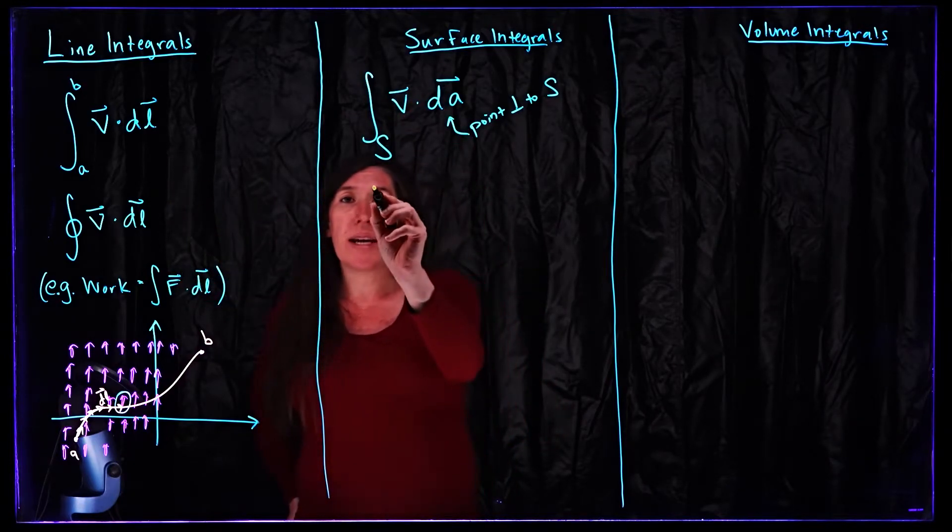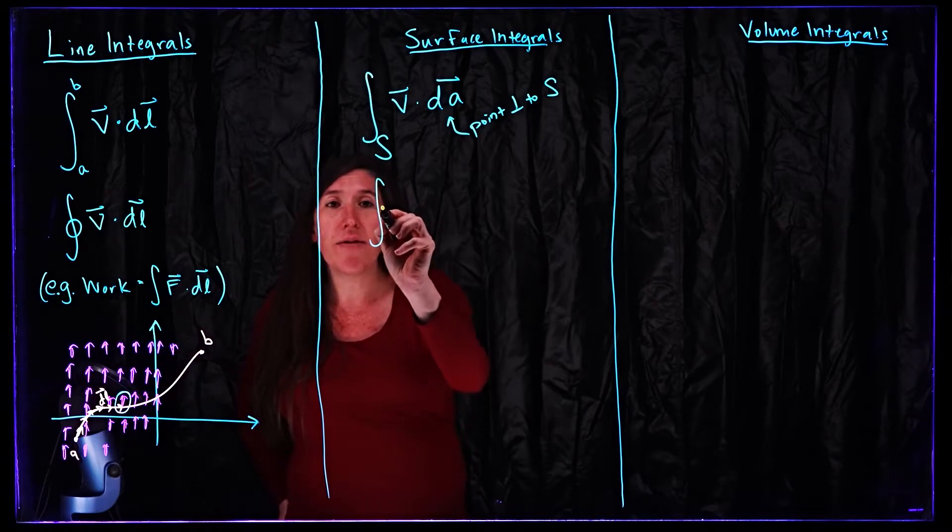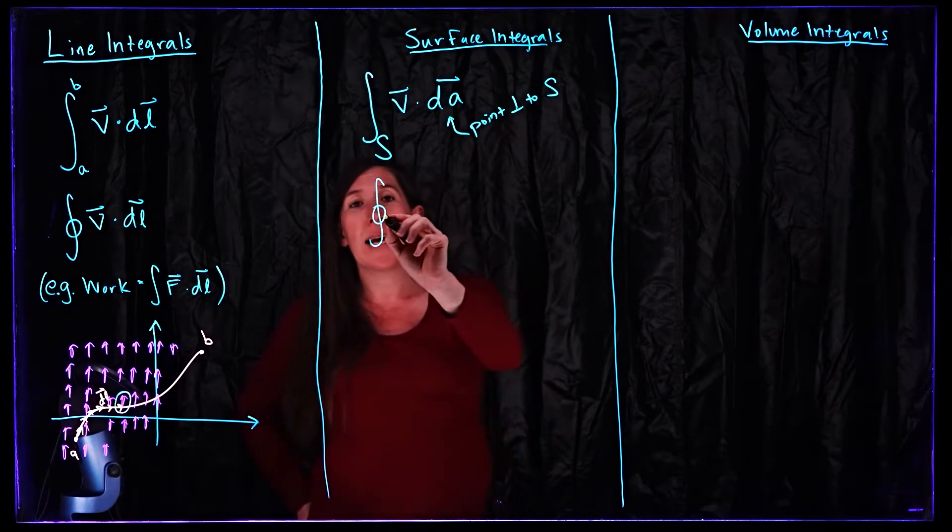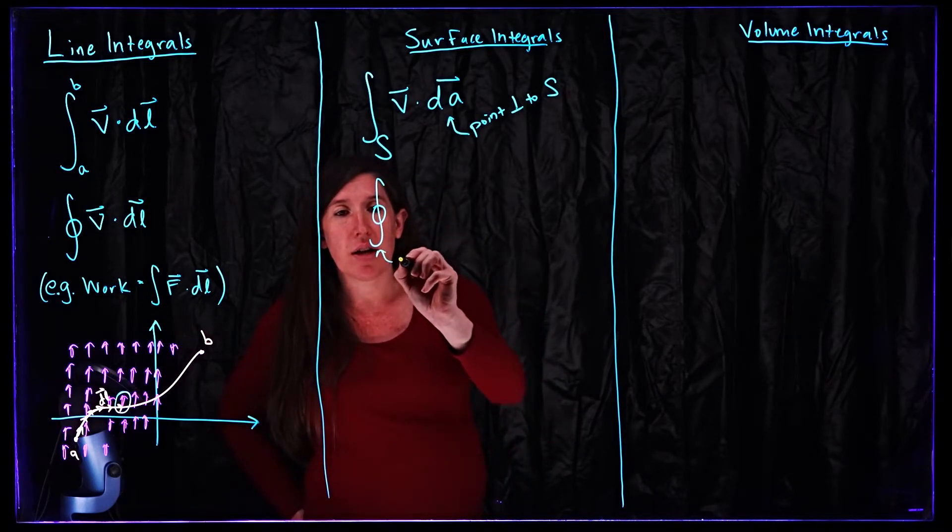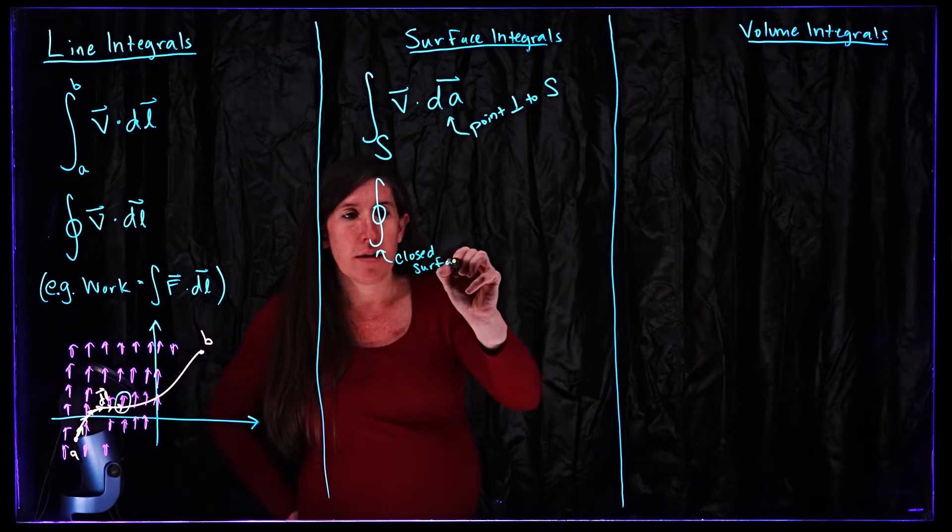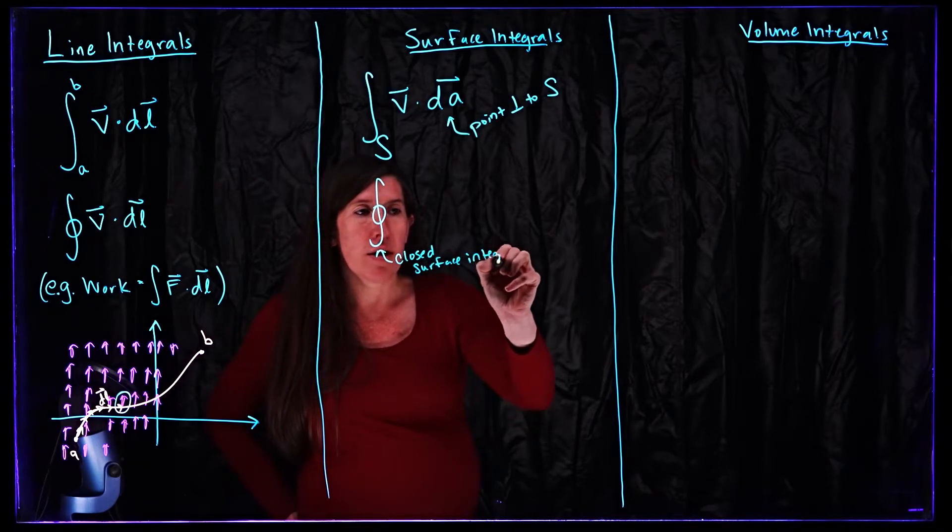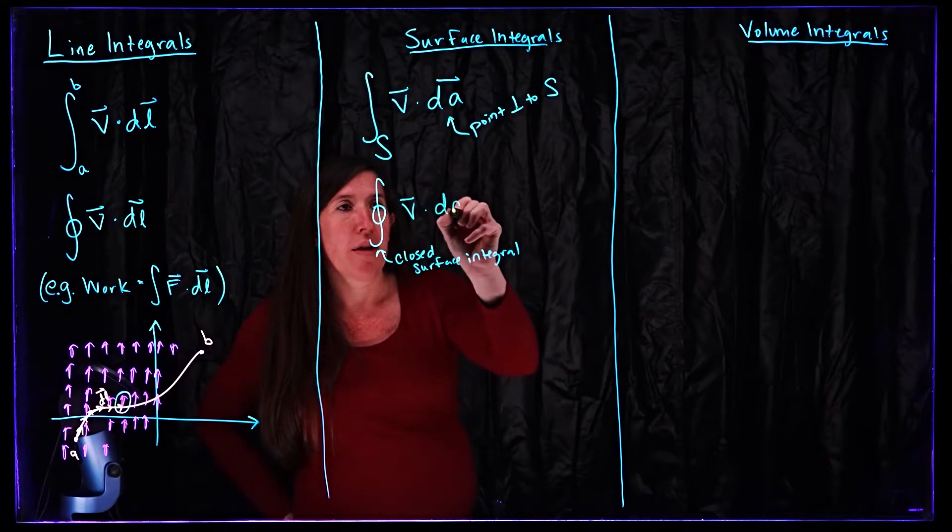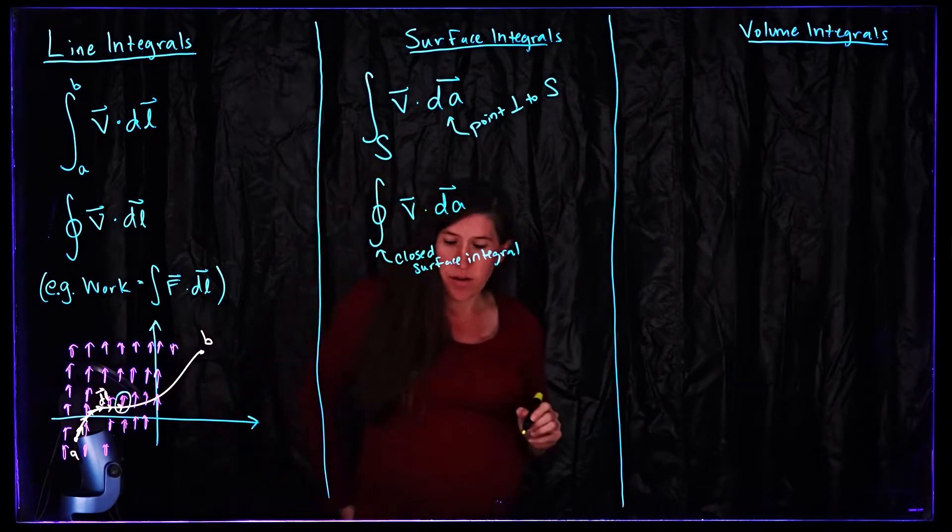Similar here we could consider taking a surface integral over a closed surface and we'll use this same notation. So this is a closed surface integral again over our vector field dotted with our infinitesimal areas over our surface.